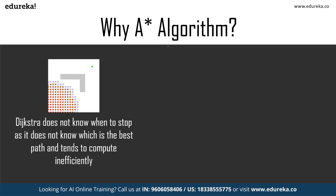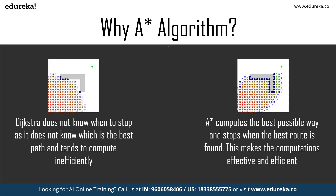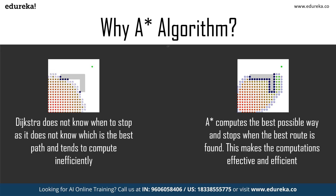Let the graphs answer that for you. Taking Dijkstra and A* for comparison — Dijkstra finds all the paths that can be taken without knowing which is the most optimal one for the problem, leading to unoptimized working and unnecessary computations. The A* algorithm, on the other hand, finds the most optimal path from the source to the destination. It knows which is the best path from its current state and how it needs to reach the destination.